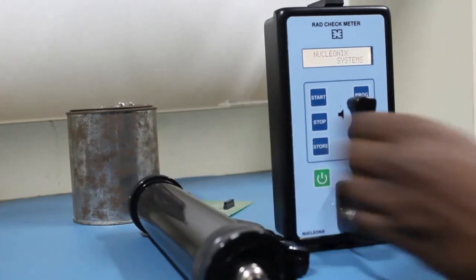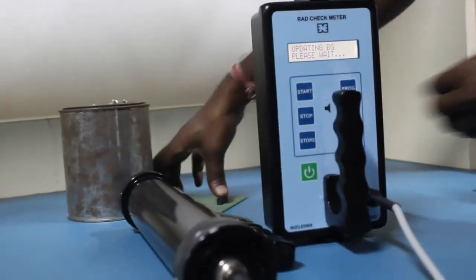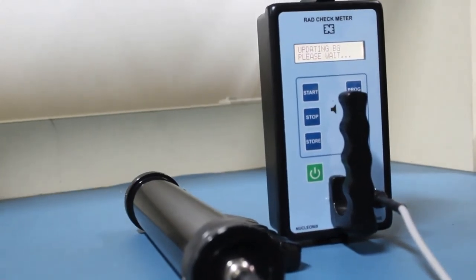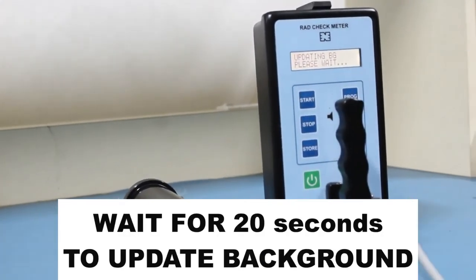For measuring the natural background, please ensure to keep the detector 1 meter from the ground and 4-5 meters away from the scrap for about 20 seconds. Then the background appears.